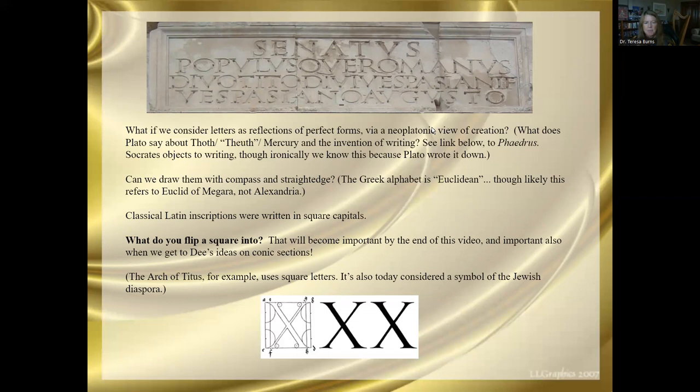Classical Latin inscriptions are written in square letters. That's both for a functional reason because of the type of tool you use and because of ideas of proportion. So you could see how each of these a square could be drawn around them. Now, what do you flip a square into? Oh, we're going to get our hidden octet and a cube again. That's going to be important by the end of this video because we're going to go from all of this to conic sections. All right. Blink your eye and it turns into a cube. Blink again. The X in there will be a conic section. Hold that thought and let me say a couple things here about the Arch of Titus.